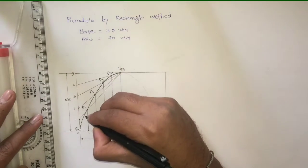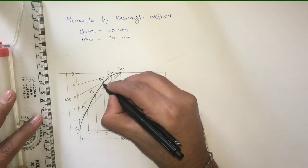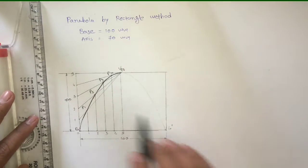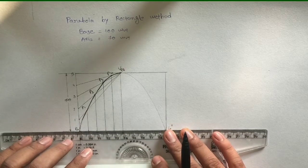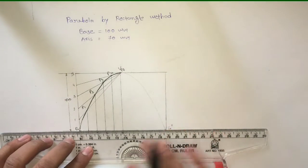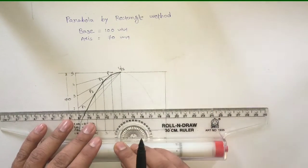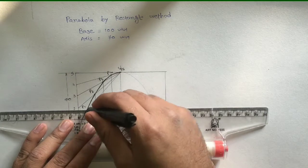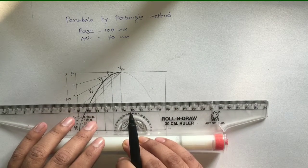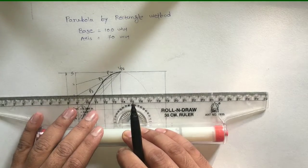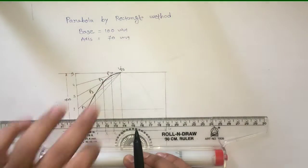So half of the parabola is obtained. Now to get the other half of the parabola you can repeat the procedure, or simply you can take the mirror image of the points obtained on the curve. So draw horizontal lines - all lines parallel to the base from the points P1, P2, P3, and P4.